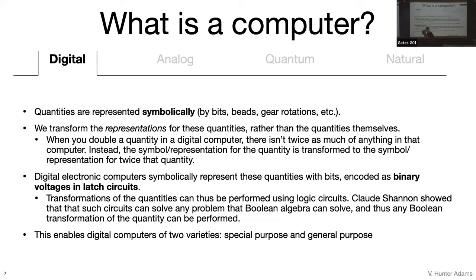There are a couple of good reasons we use voltages in latched circuits as our representations. The big reason is that we can affect transformations on those representations by means of logical circuits. Claude Shannon showed that these circuits can solve any problem that Boolean algebra can solve—meaning if we use voltages in latched circuits as our representation and use digital circuits to affect the transformations, we can do any mathematical transformation we care about. He did that in his master's thesis, by the way.